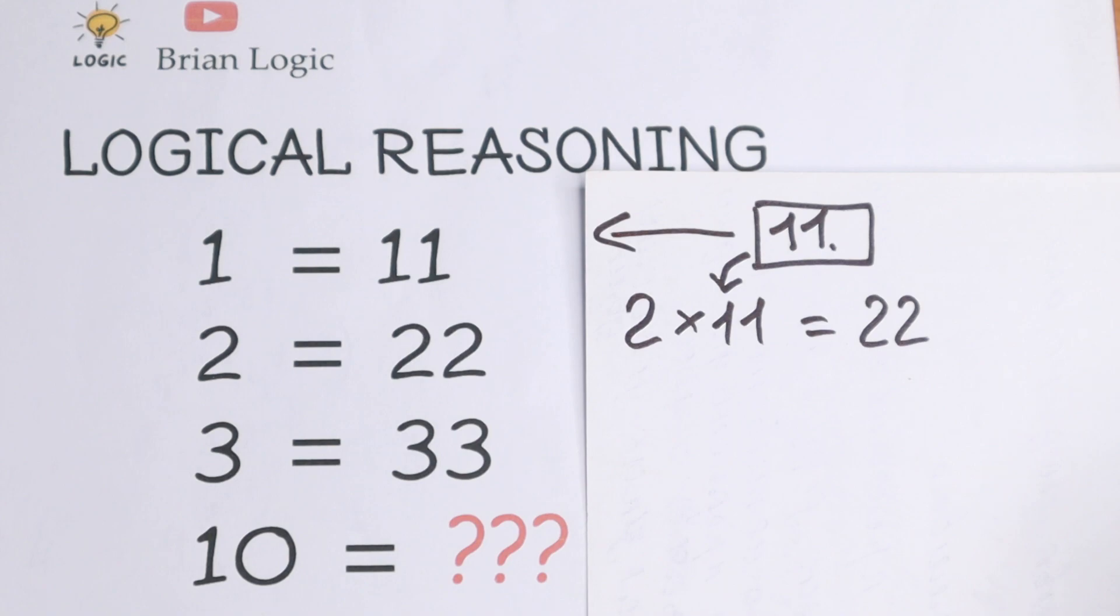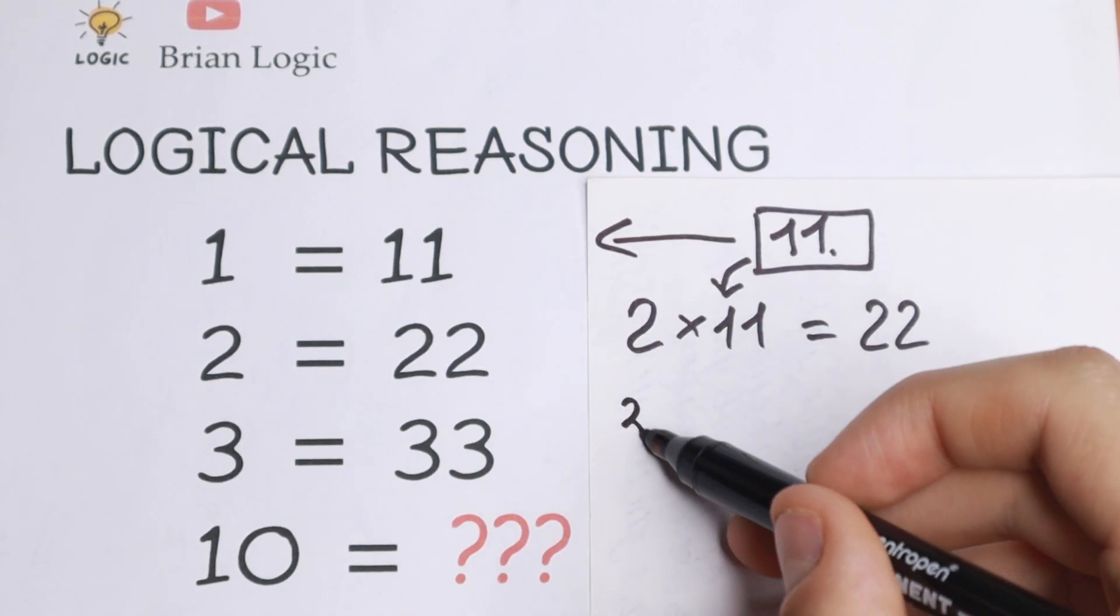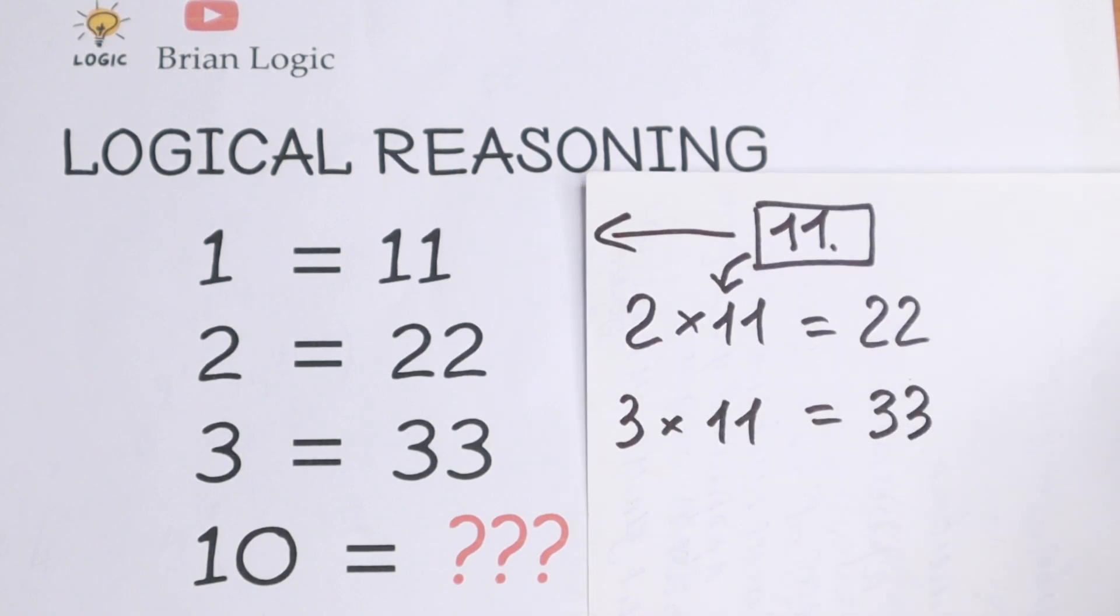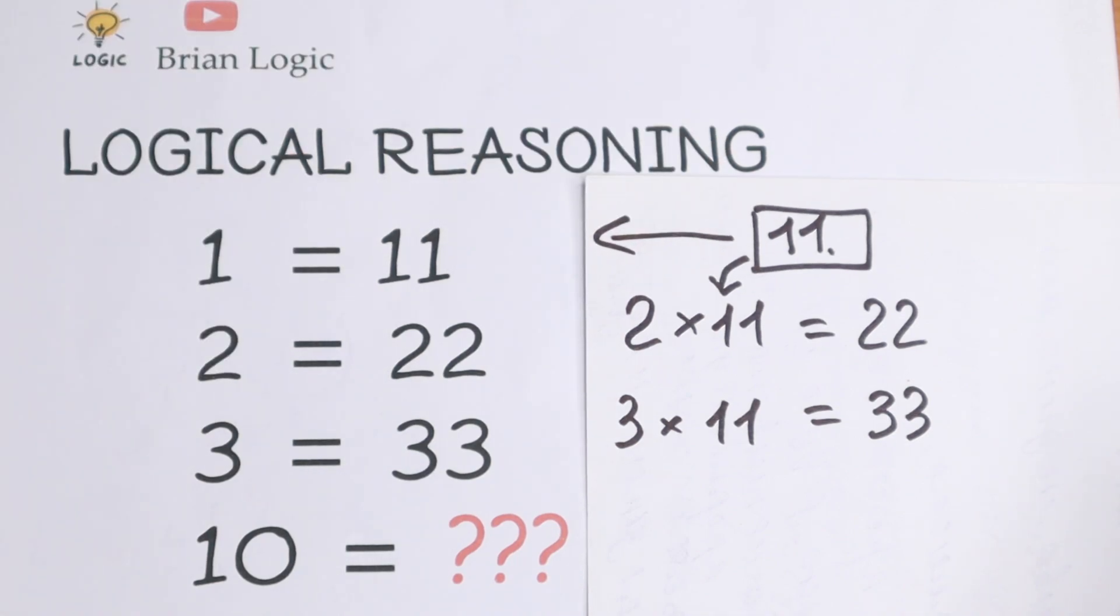And in the next row, we have 3 times 11 equals 33. So we have a pattern between all these numbers: 11 is the key number and we multiply it by this coefficient - 2 times 11, 3 times 11.